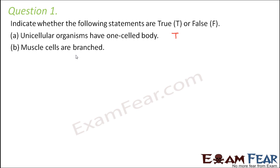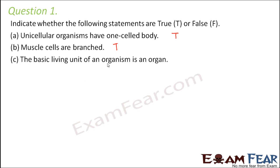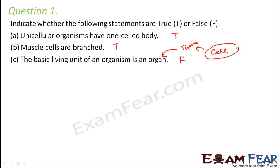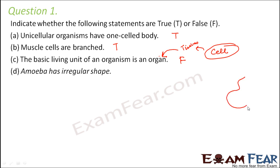When you talk about a nerve cell or a muscle cell, yes they are branched, so that is also true. 'The basic living unit of an organism is an organ' — absolutely not. That is what we have been learning in this lesson: the basic living unit of an organism is a cell. Groups of cells form tissues, and groups of tissues form an organ. Therefore the basic unit is a cell.